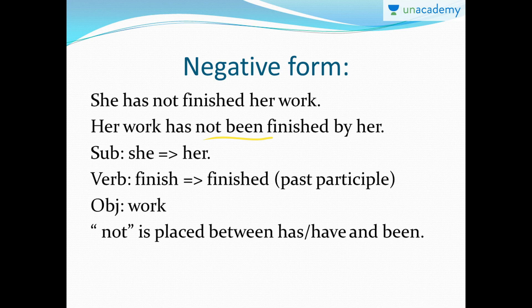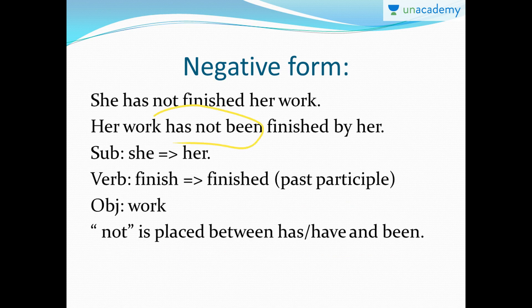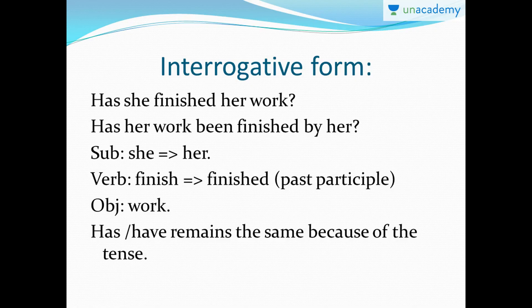Since 'not' is also placed in the sentence, it is always better to place 'not' before 'been.' So: 'Her work has not been finished by her' makes more sense. The subject 'she' changes to 'her,' 'finished' stays as the past participle, the object is 'work,' and 'not' is placed between 'has'/'have' and 'been.' I hope you guys get a hang of it once you start revising and making your own sentences.